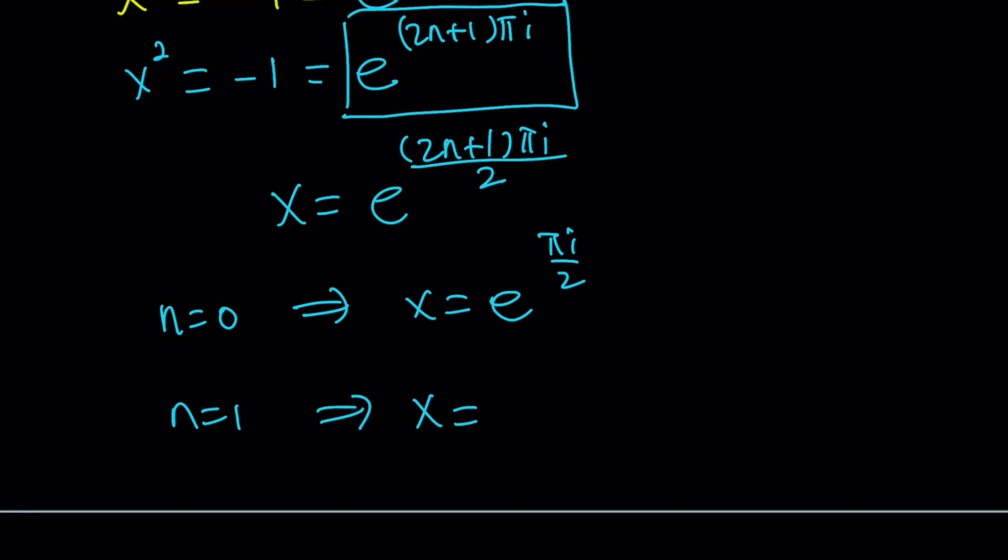And this is just going to be i. And this is going to be -i. Because π/2 basically indicates on the coordinate plane, you're looking at 0, 1 or i, in other words.